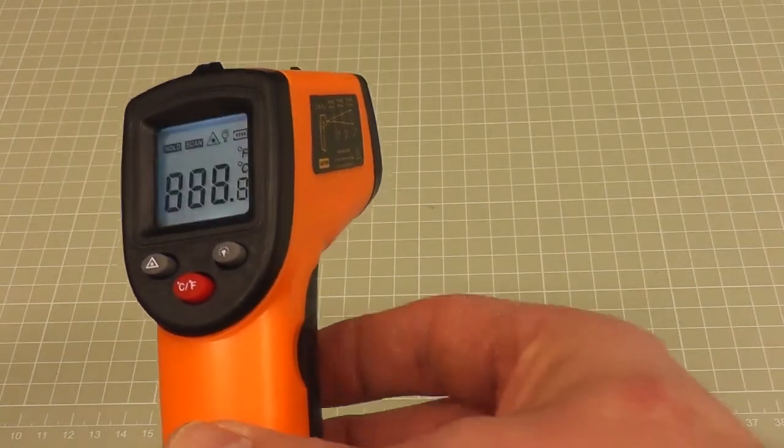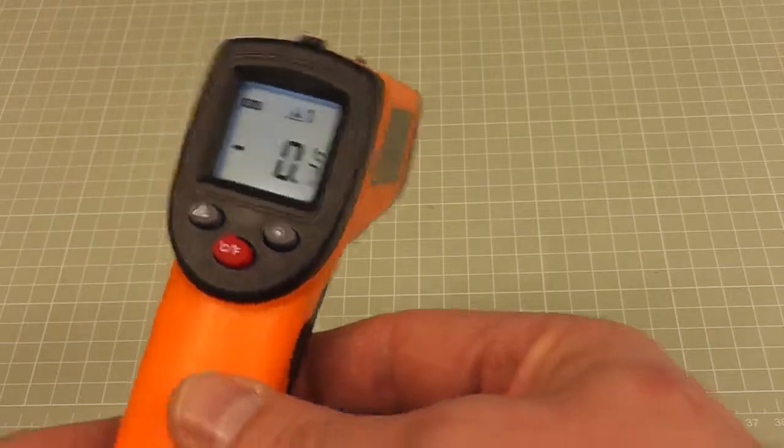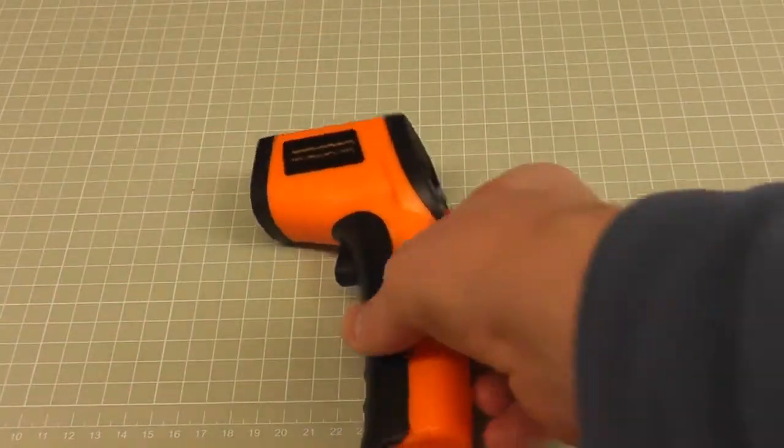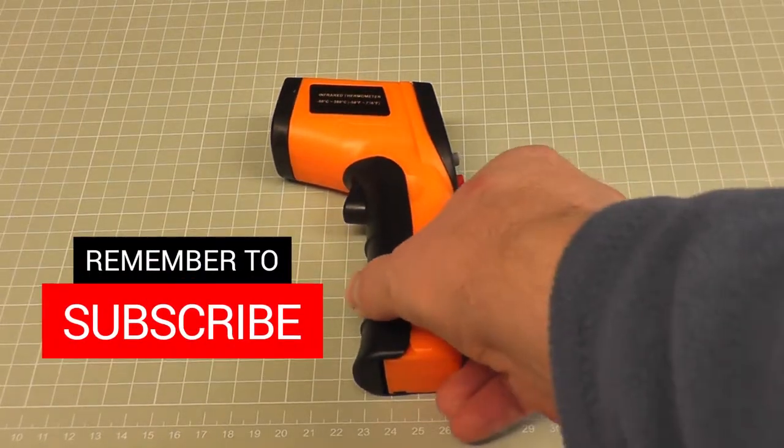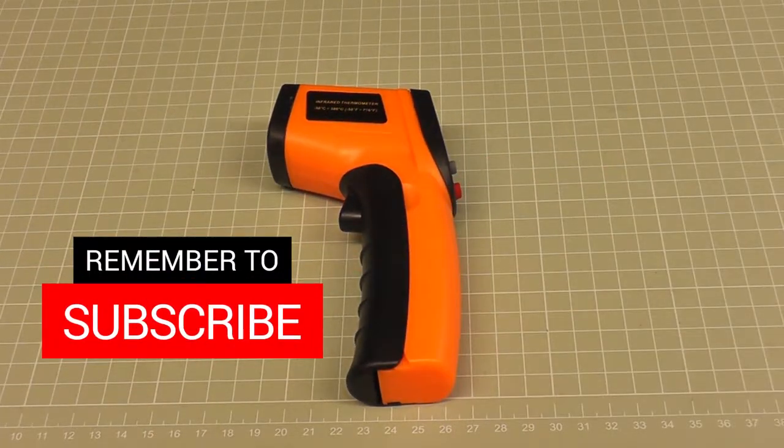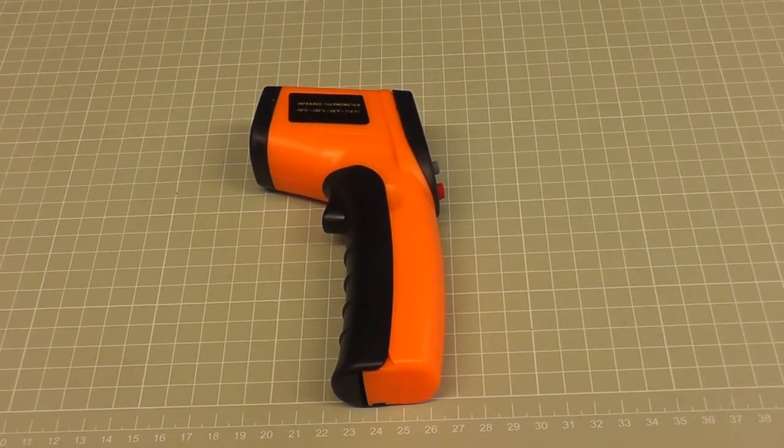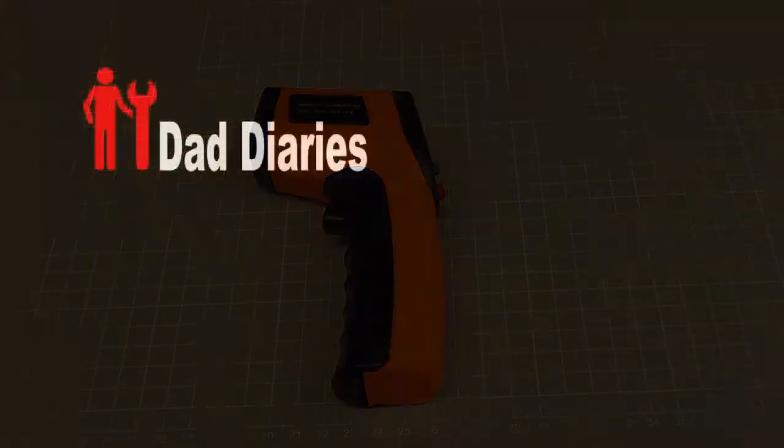So that's the infrared thermometer, available on eBay or Amazon for about seven pounds. That's it for this video. Thanks for watching. If you like the video, please subscribe and I'll see you on the next one.